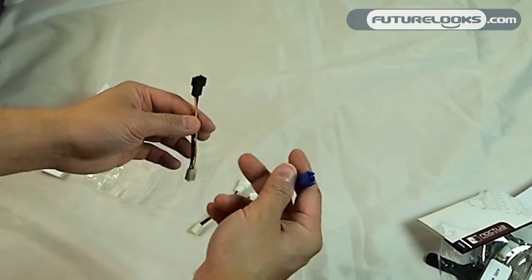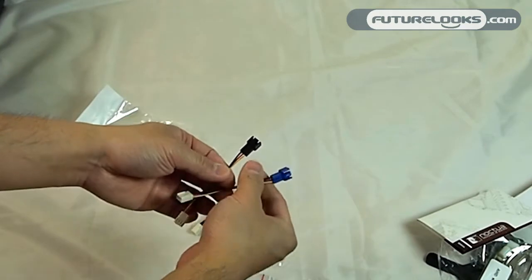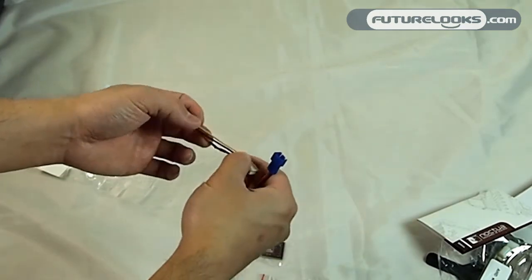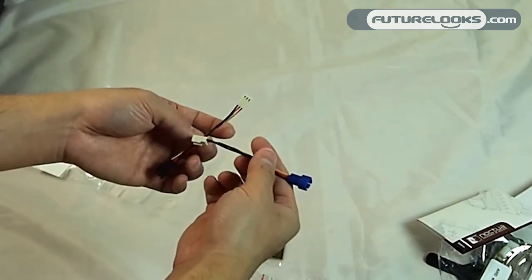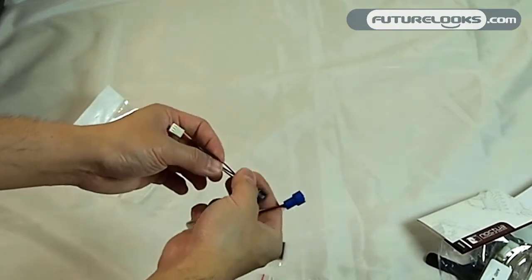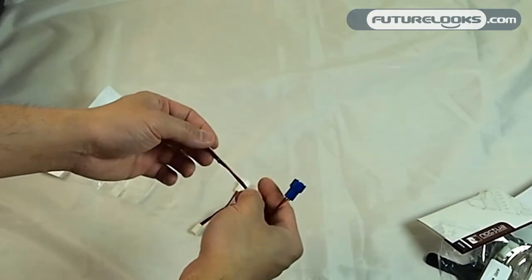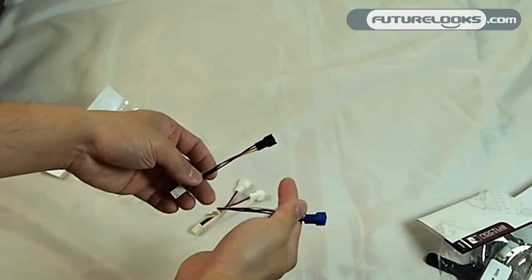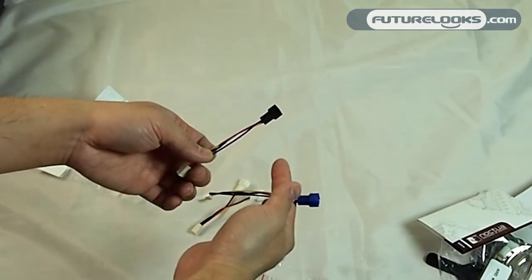Or you can choose to run two different connectors here. Now, judging by the fact that there is a resistor on here, this probably lowers the fan RPM so that you get quieter cooling at the expense of cooling performance.